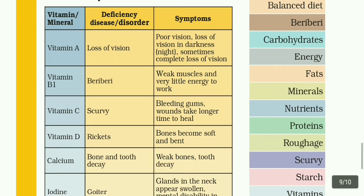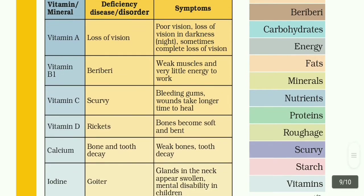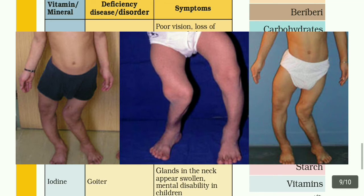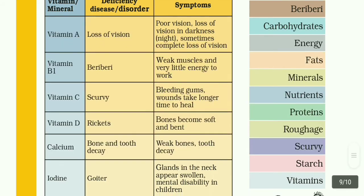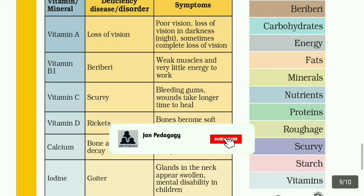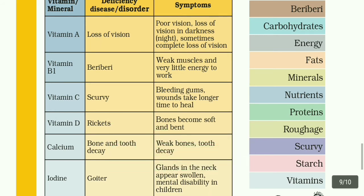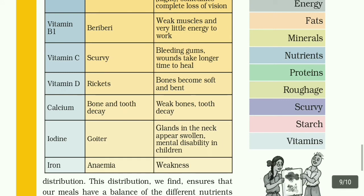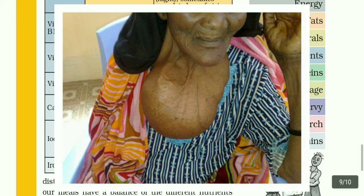It takes too much time to cure. Vitamin D deficiency disease: bones become soft and bent. Calcium deficiency disease: bone and tooth decay, sometimes weak bones. Then iodine deficiency disease: goiter — glands in the neck appear swollen — and mental disability in children.